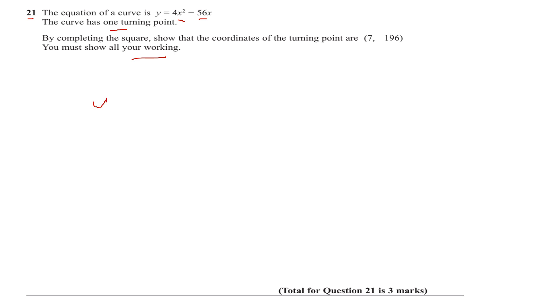Step one, I'm going to pull out a factor of four. So we have four brackets, x squared minus 14x. I'll factor out a four. Actually, minus 56x. I'm not going to complete the square here on the bit inside the bracket.